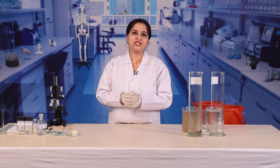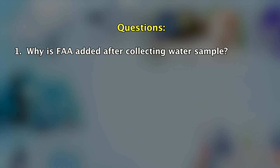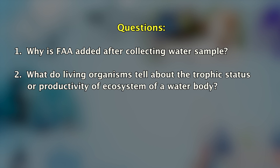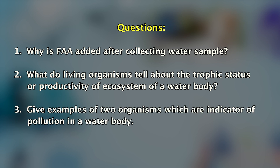Now, try to answer these questions: Why is FAA added after collecting the water sample? What do living organisms tell about the trophic status or productivity of the ecosystem of a water body? Give examples of two organisms which are indicators of pollution in a water body.